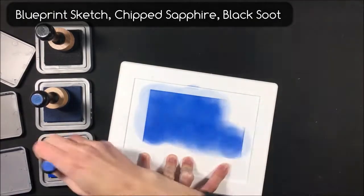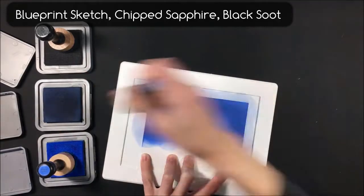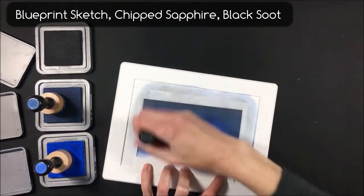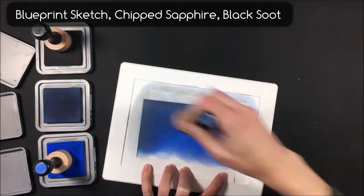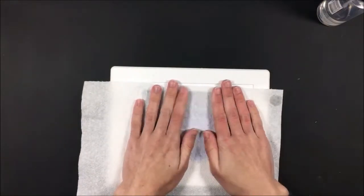This is becoming my go-to background for night skies. It is blueprint sketch, chipped sapphire, and black soot distress oxide ink. I like to kind of go in a radial pattern to make the edges a little bit darker and then the center a little bit lighter. I'm making sure to blend down toward the bottom but not all the way because my snowbank is going to cover that.